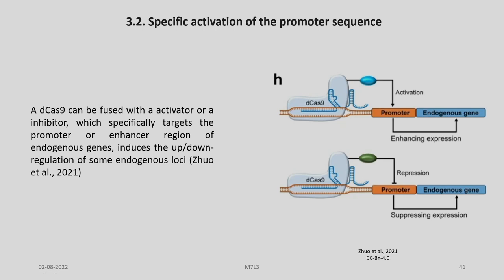A D-Cas9 can be fused with an activator or an inhibitor which specifically targets the promoter or enhancer region of endogenous genes, inducing up- and down-regulation of endogenous loci. An enhancer or activator binds to a promoter causing activation, while a repressor suppresses expression. This is a method by which we can simply switch a gene off or on easily.